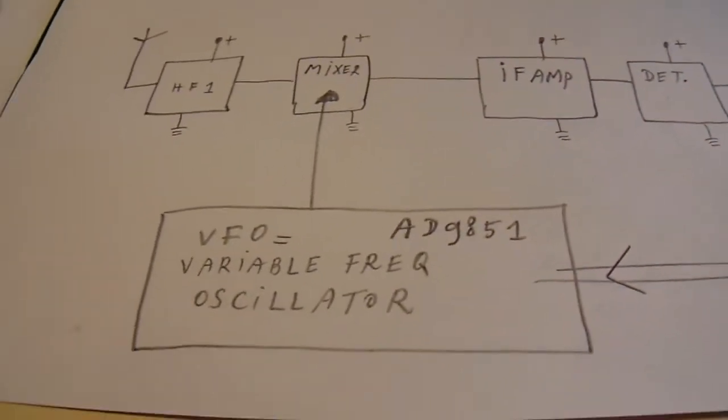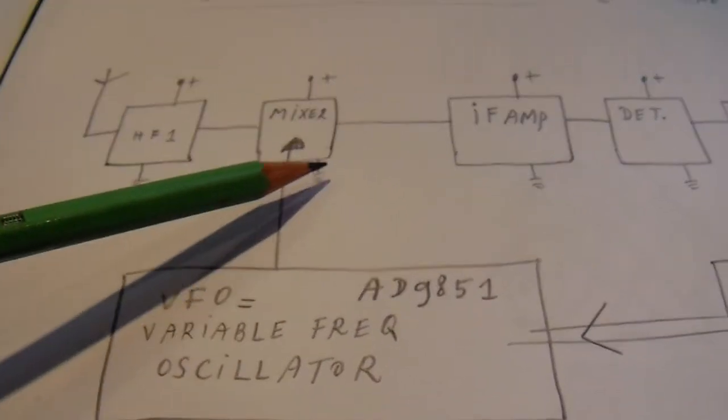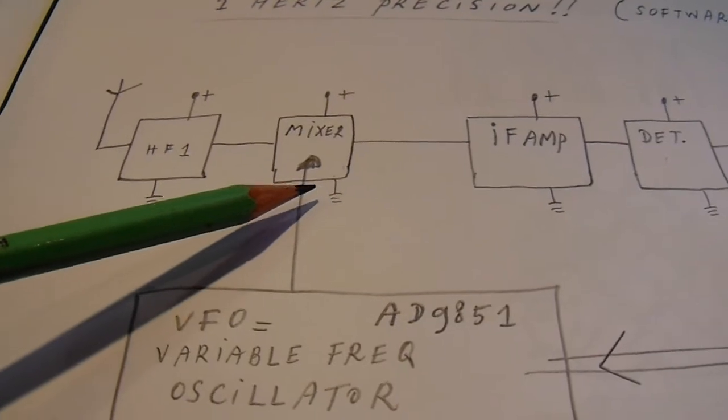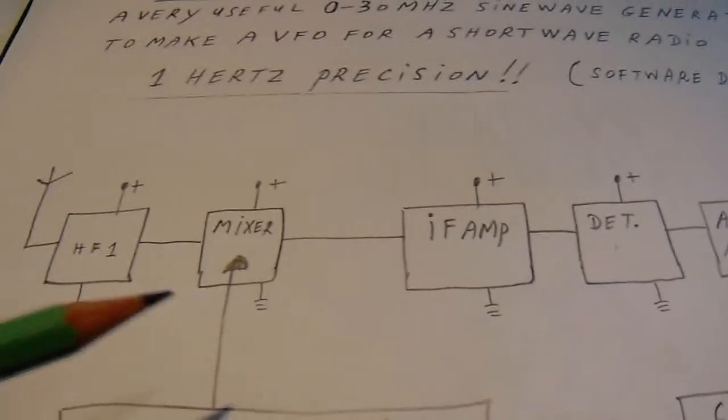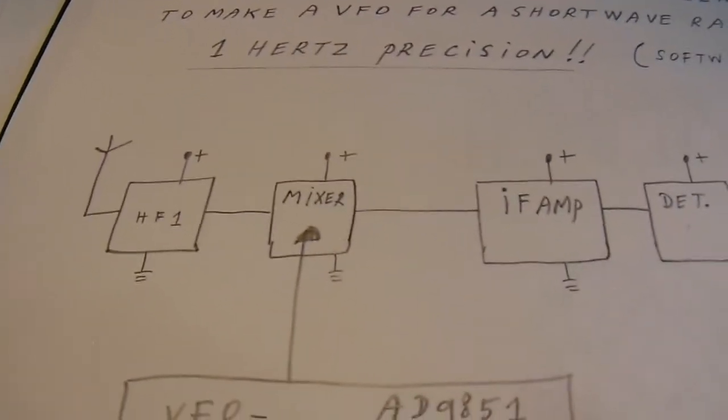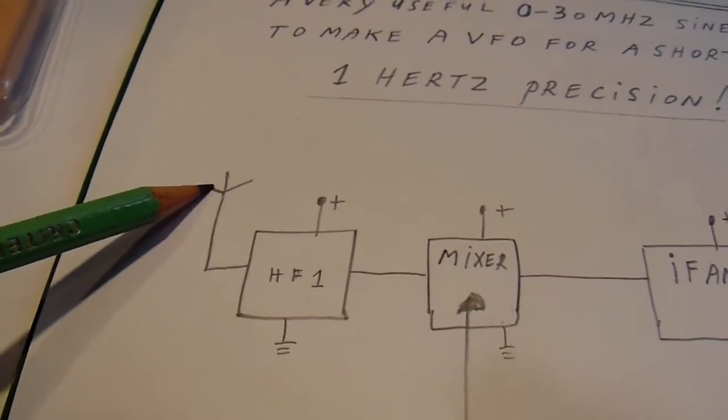So the VFO is essential. It generates a frequency that is, in this simple case, 455 kilohertz higher or lower than you receive on the antenna.